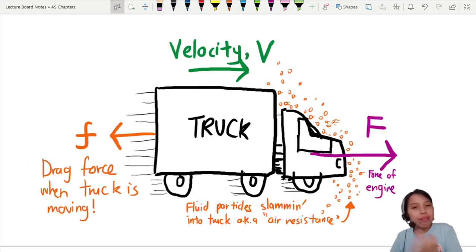So you can imagine we have a truck going super fast at a certain velocity. Why? Because the engine is giving it a nice big force pushing to the right.